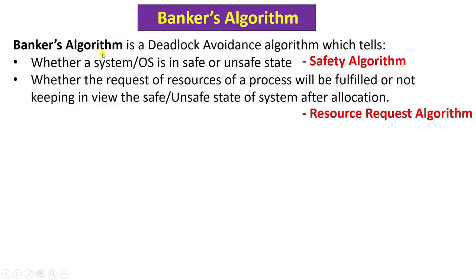So what is Banker's Algorithm? It is a deadlock avoidance algorithm which tells two things: first, whether a given operating system is in a safe state or an unsafe state; and second, whether the request of resources by a given process will be granted or not. The first is told by the safety algorithm, and the second by the resource request algorithm. Both these algorithms are inside Banker's Algorithm.